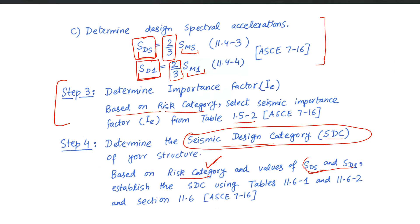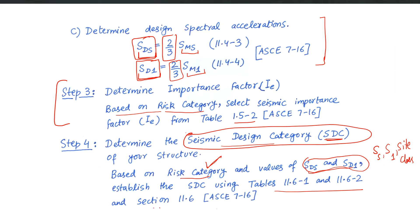Because SDS and SD1 already incorporate the effect from SS, S1, and the site class, we will combine all that information along with the risk category to assign a seismic design category to our structure. We will establish that SDC using two tables in Section 11.6 of ASCE 7-16.